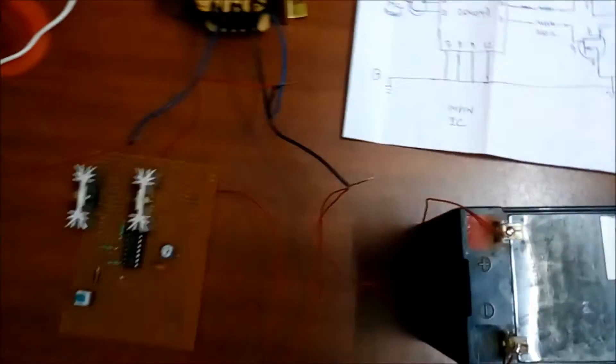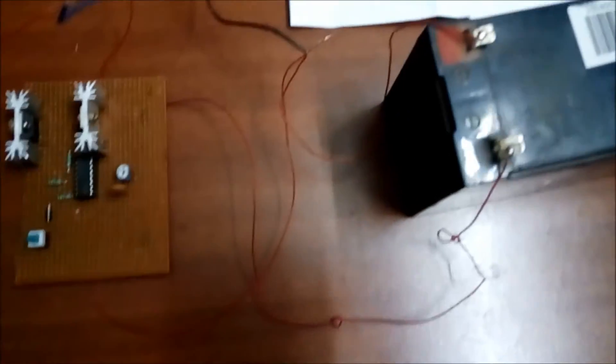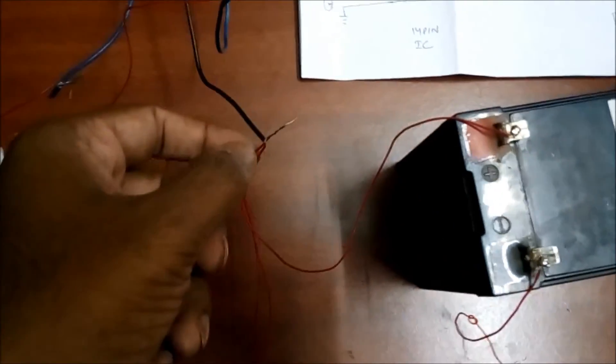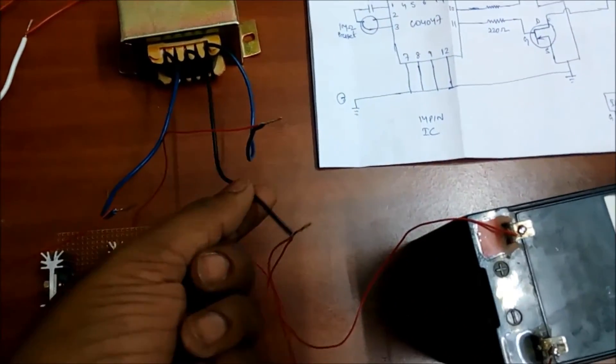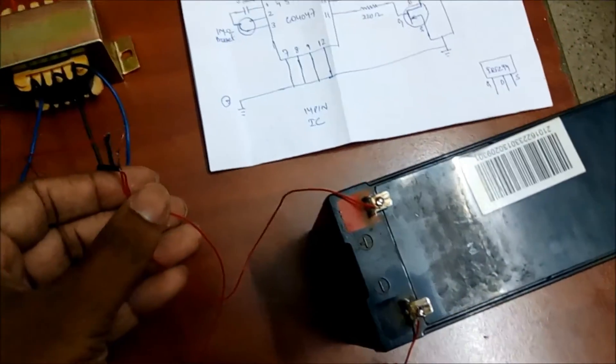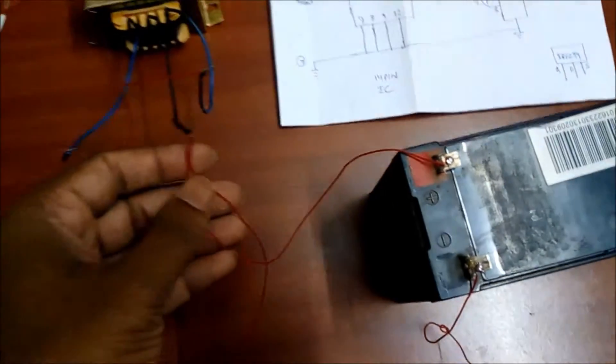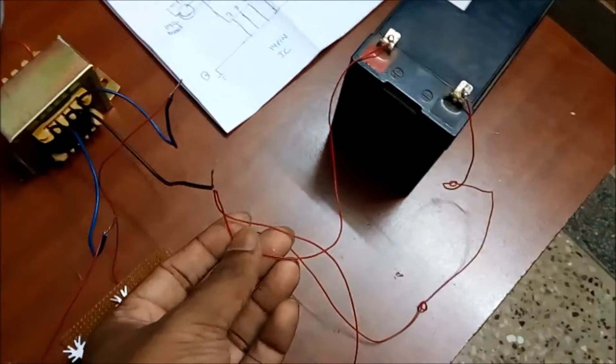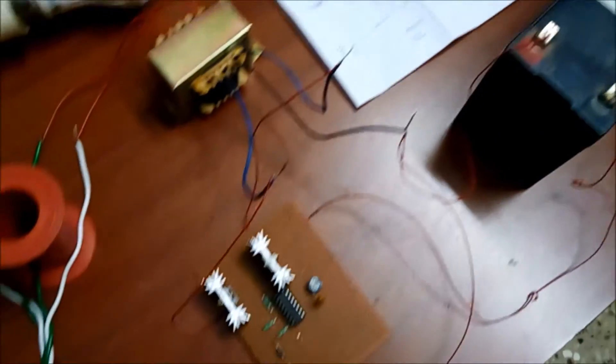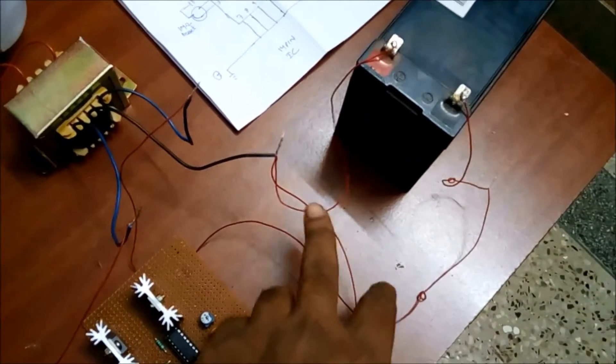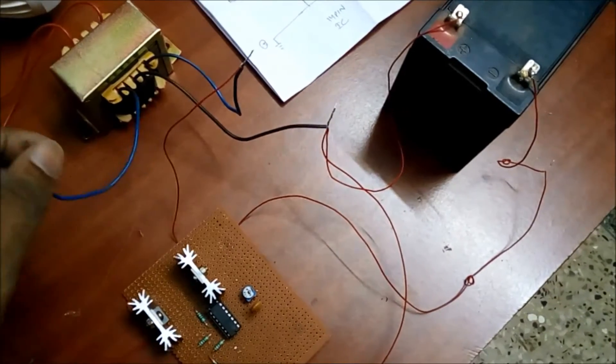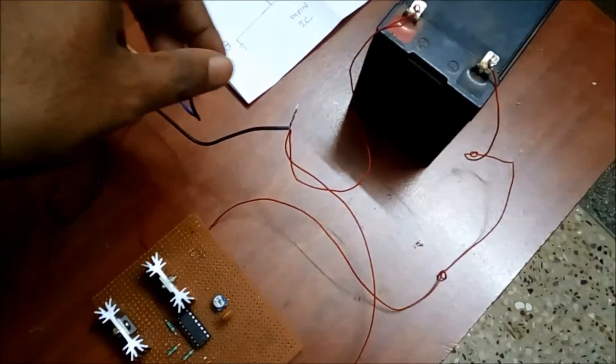After just connecting all these things, I just said you that the center of your transformer should be connected with the positive end of your battery. Just connect that battery end. Then after connecting all these things, supply is given over here, and the output point, the two output points are connected over this end.